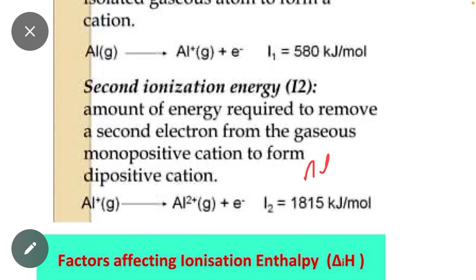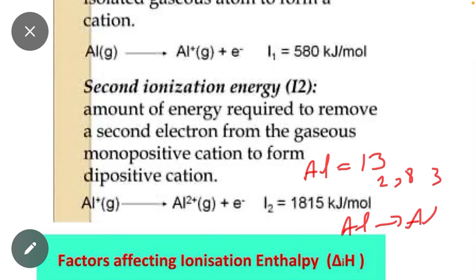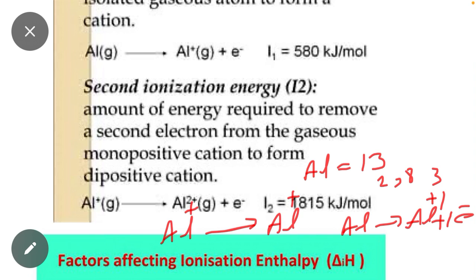For example, in case of aluminium: aluminium has 13 electrons — 2, 8, and 3. In the first step, aluminium loses one electron and aluminium gets a positive one charge. Similarly, aluminium +1 removes one electron and converts into aluminium +2, and aluminium +2 again loses an electron and converts into aluminium +3, meaning it removes the third electron.